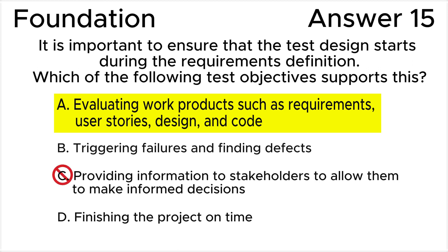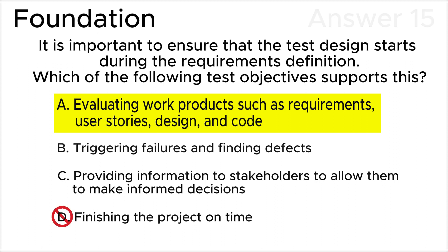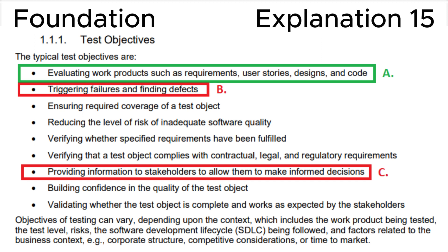At the test completion stage, quality control engineers give an opinion on the project, for example whether to release it or not. Answer D is wrong because finishing the project on time doesn't relate to test objectives at all.